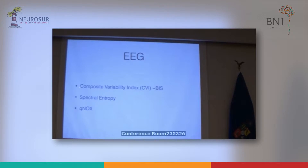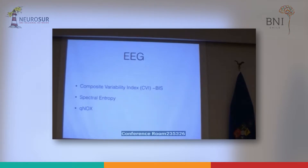The EEG-derived ones are three: the Composite Variability Index (CVI), which is a derivative of BIS. BIS is a depth-of-anesthesia monitor — more or less what Patrick has been working on, but BIS is an older one and has several problems assessing depth of anesthesia. Spectral entropy also uses EEG. Both of these are spin-offs of monitors designed to assess unconsciousness and amnesia, not nociception. But they modify or do some tricky things to try to monitor nociception.